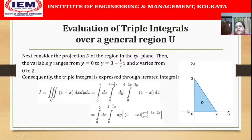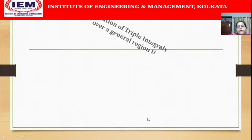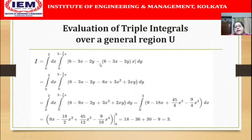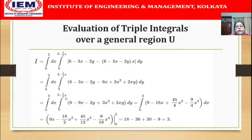This can now be evaluated. Integrating with respect to z, since x is constant, we get z - zx evaluated at the limits, yielding the new integrand. After simplification, the integrand becomes 6 - 9x - 2y + 3x² + 2xy. We then integrate with respect to y from 0 to 3 - (3/2)x, and the integrand for the last integral becomes 9 - 18x + (45/4)x² - (9/4)x³.